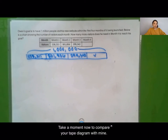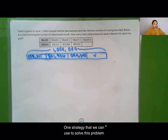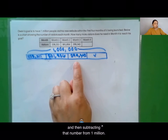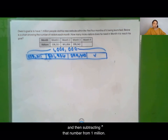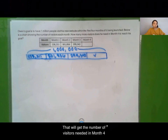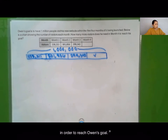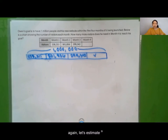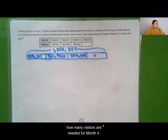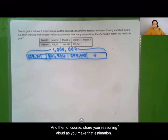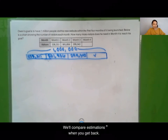Take a moment to compare your tape diagram with mine. One strategy we can use to solve this problem is by first finding the sum of the first three months and then subtracting that number from one million — that will give us the number of visitors needed in month four to reach Owen's goal. Before solving for the precise answer, pause the video to estimate how many visitors are needed for month four and share your reasoning aloud. We'll compare estimations when you get back.